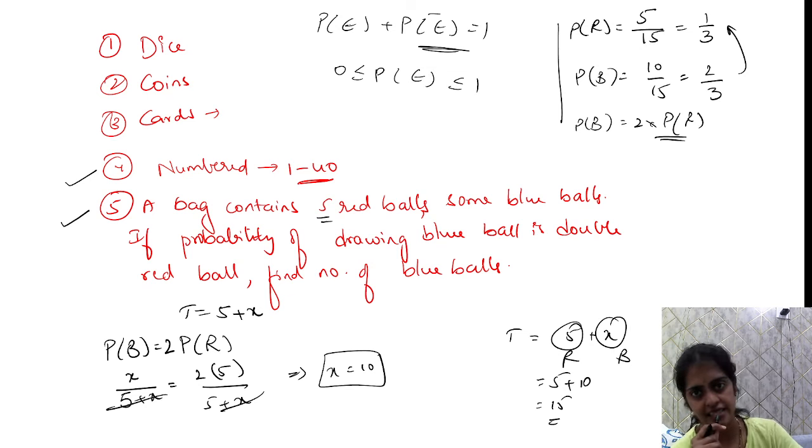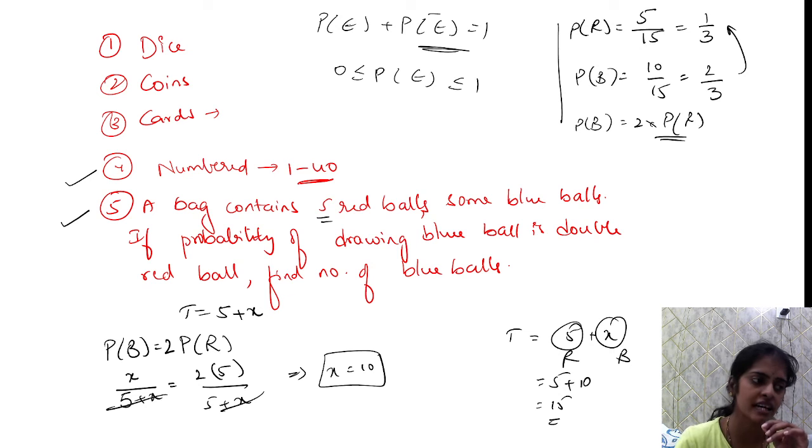Dice - single dice question is two marks. Double dice question is six marks. Two coins question and cards question. Cards, dice, even six marks. Two dice, okay? You have to answer number 1 to 40.